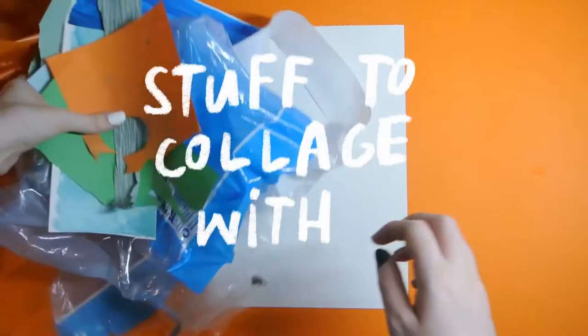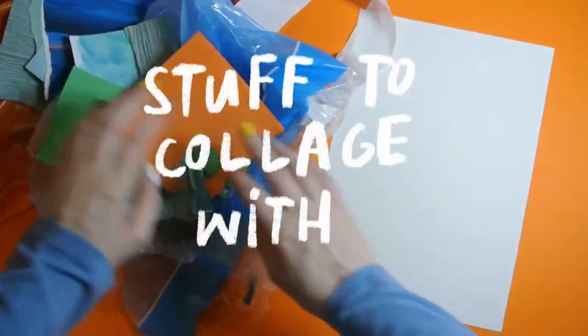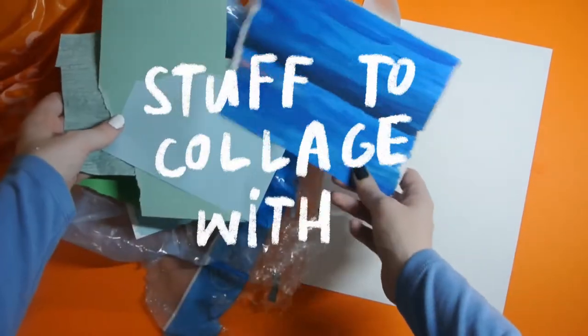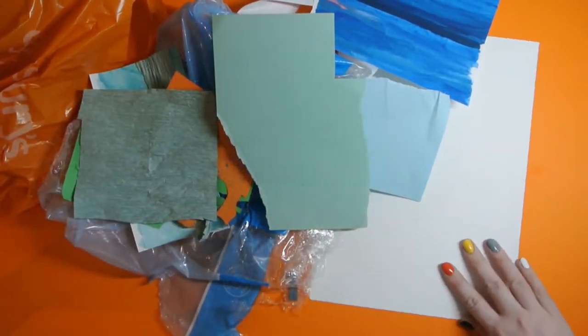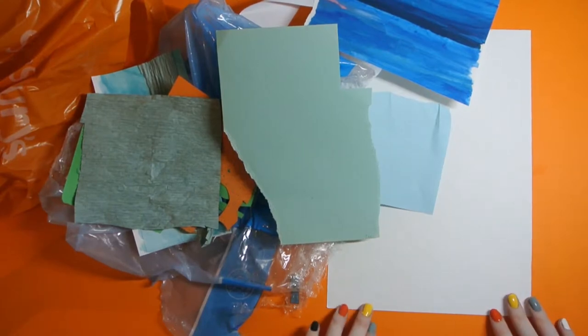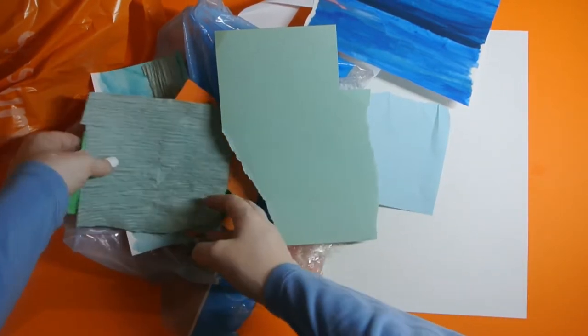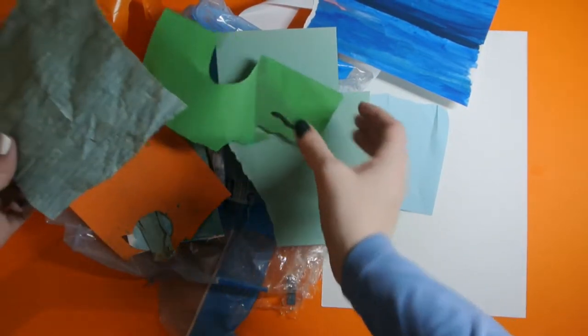And we'll also need some stuff to collage with. So scrap bits of paper, scrap bits of plastic wrapping that you want to give a new life to, bits of plastic bags, the undersides of envelopes, whatever you've got we can use. Just make sure that you've got permission to be cutting it out and sticking it on.